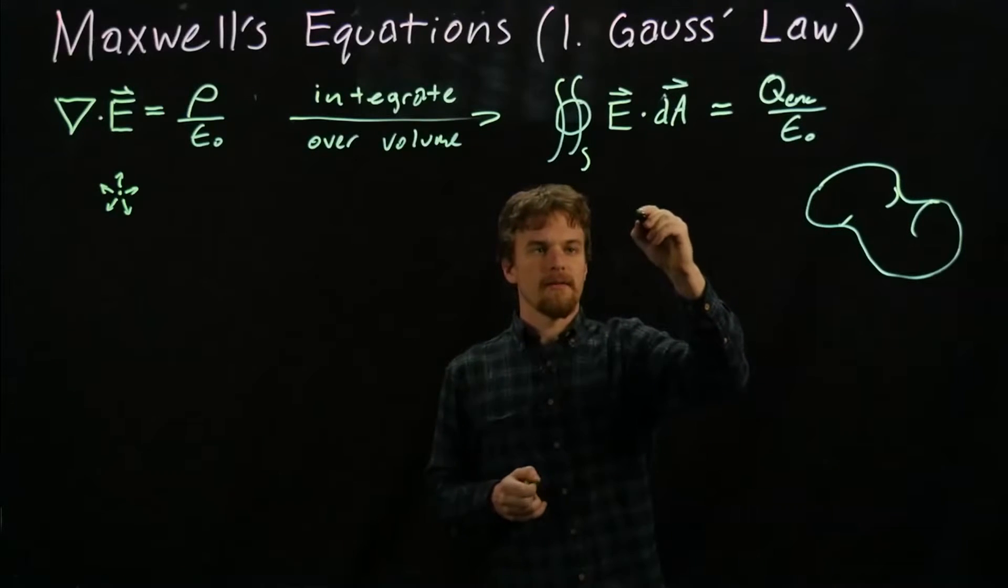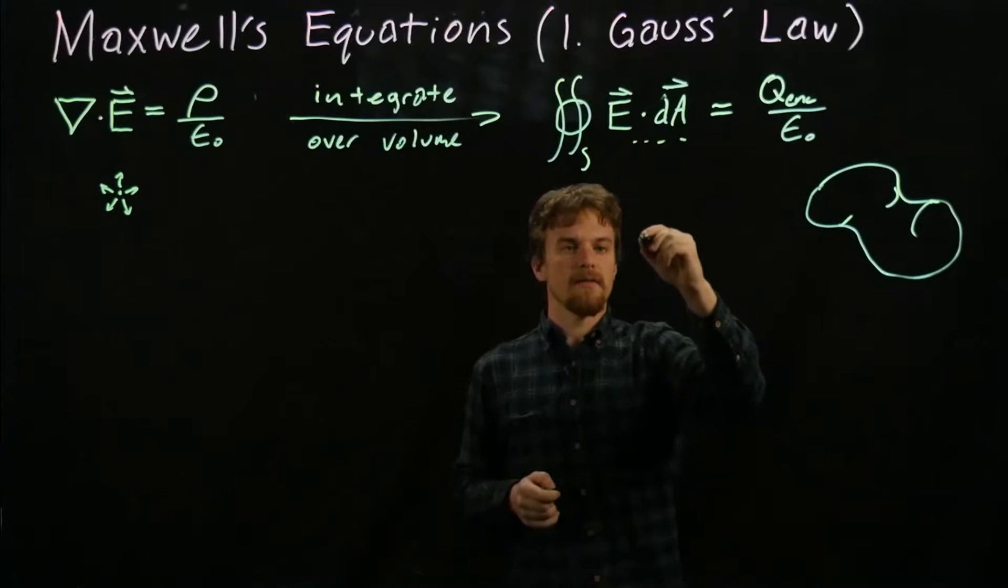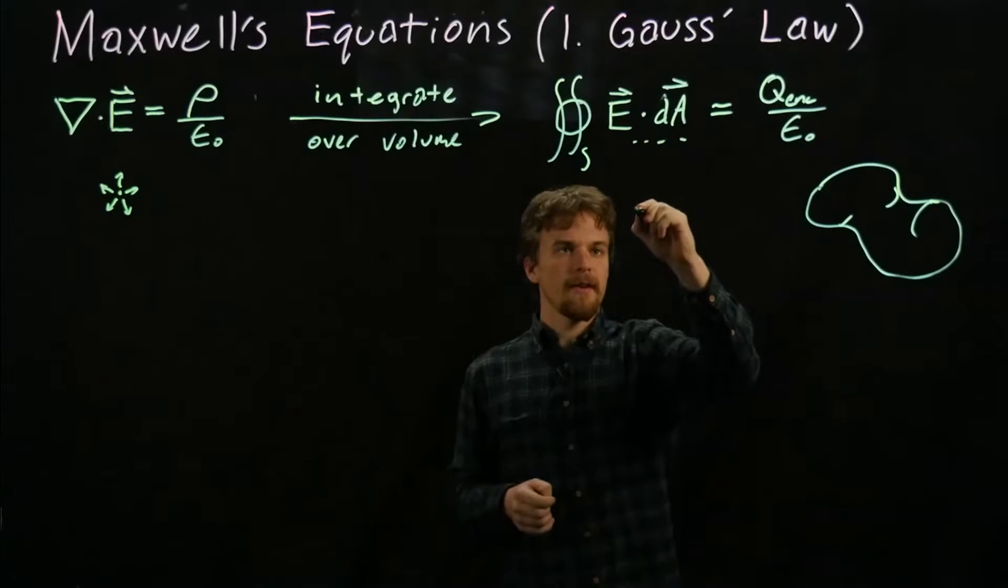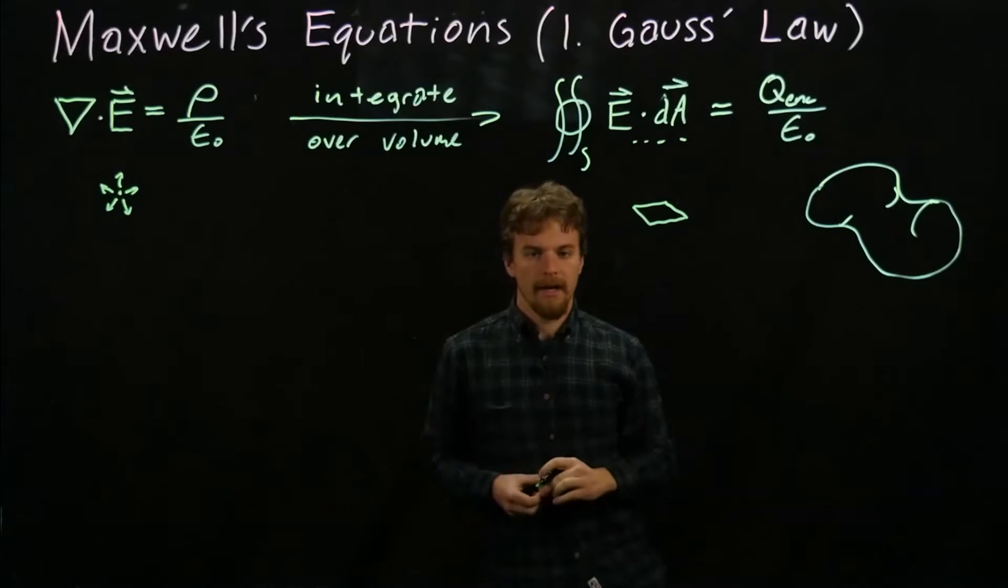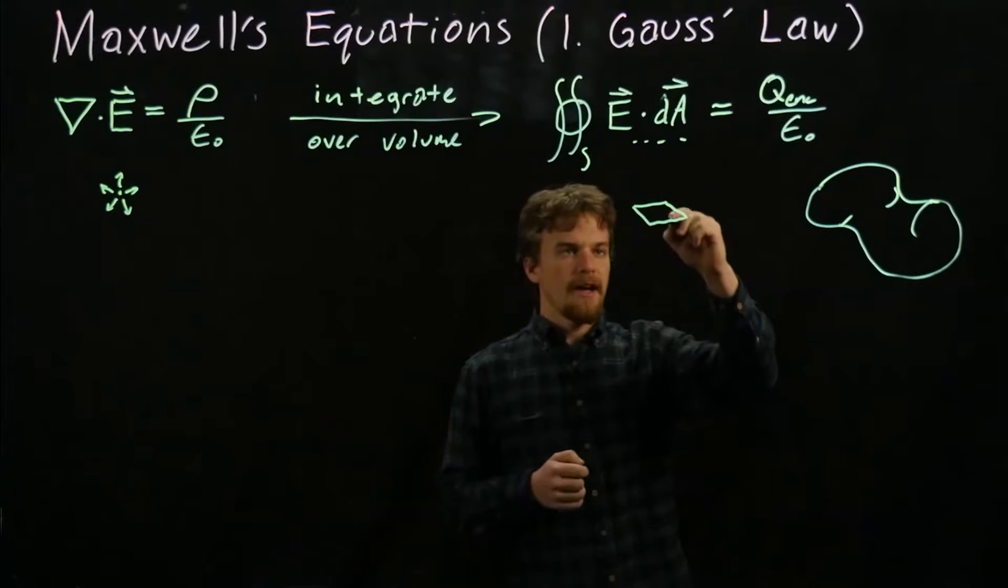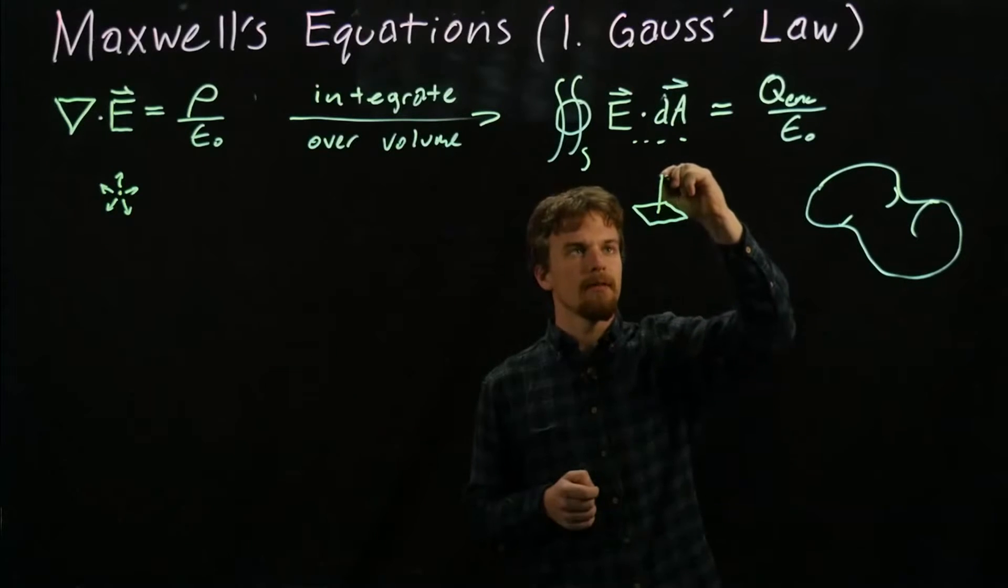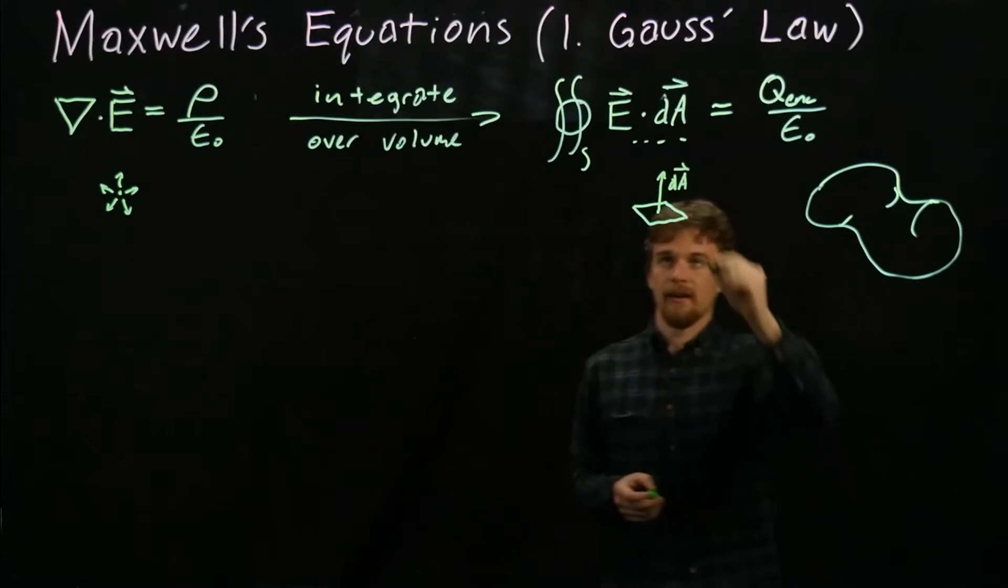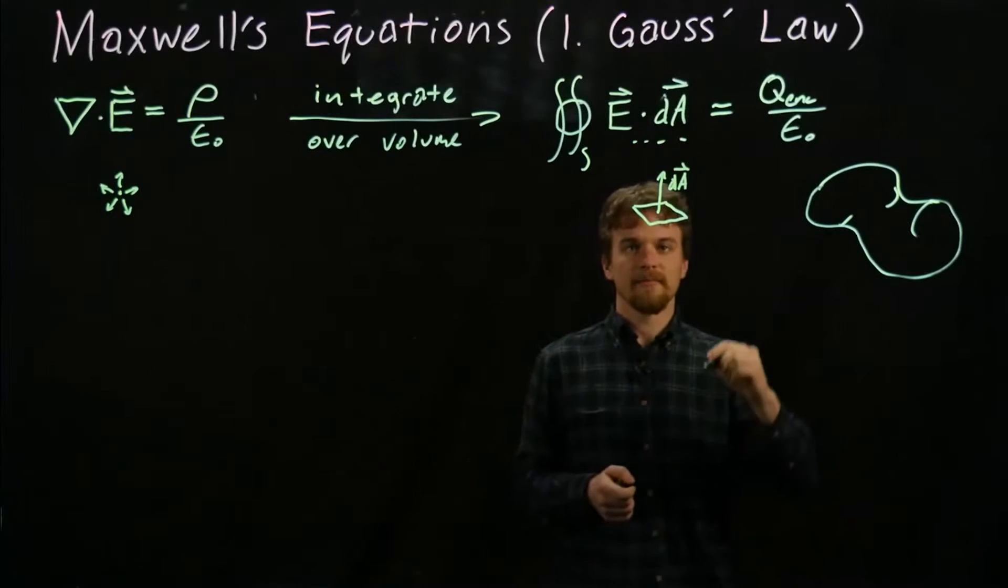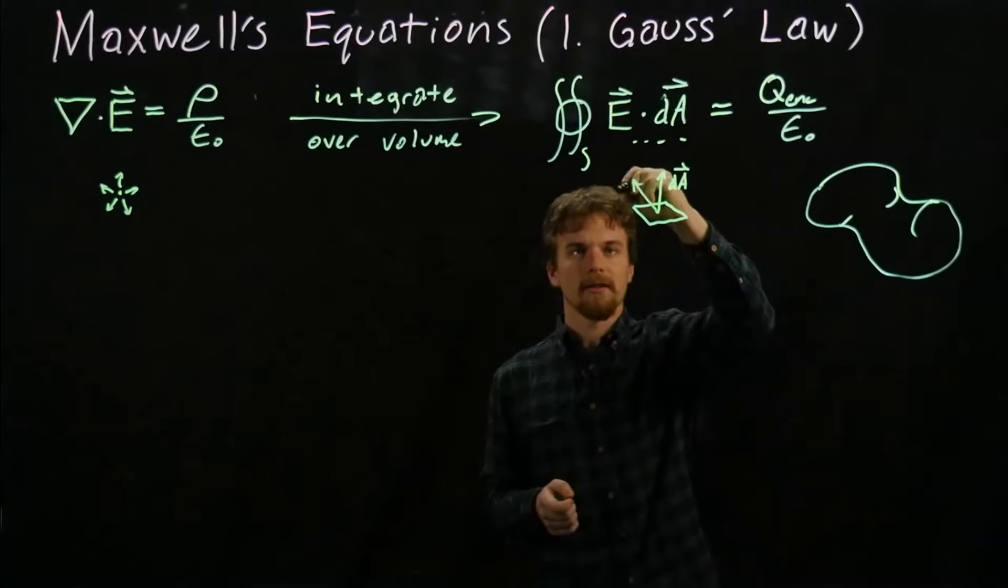Let's look at what this part means. A differential area, an infinitesimally small area, is defined in vector notation as a vector perpendicular to that differential area—it would be defined like that, this would be the vector dA. Let's say E looks like that in that particular spot on the surface.